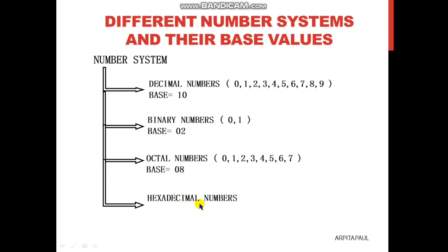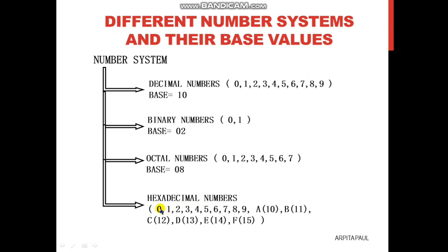Next one is hexadecimal numbers. By the name, 'decimal' means 10 and 'hexa' means 6, so 6 plus 10 — a total of 16 numbers are present in hexadecimal. The numbers 0 to 9 are the decimal numbers. After that, the remaining 6 numbers are represented differently: 10 is represented as A, 11 as B, 12 as C, 13 as D, 14 as E, and 15 as F. So 0 to 9 are written normally and 10 to 15 are written as A, B, C, D, E, F. As there are 16 digits present in hexadecimal, the base of the hexadecimal number system is 16.